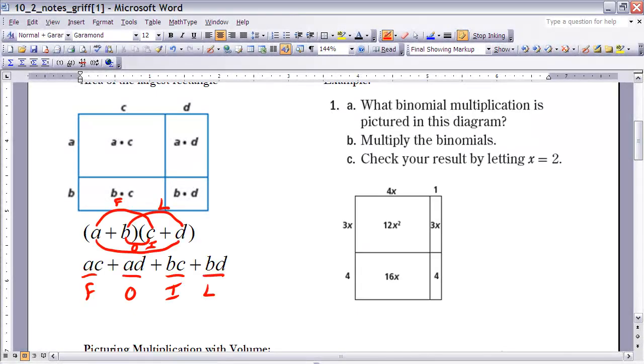So let's apply this area method that we talked about to this first example here. It says, what binomial multiplication is pictured in this diagram? So as I look at this diagram below, remember that it's length times width, and when I have it written like this, it would be the sum of these two measurements. So this is the same as saying 3x plus 4, and we're multiplying it by the sum of these two, which would be 4x plus 1. So that would be part A.